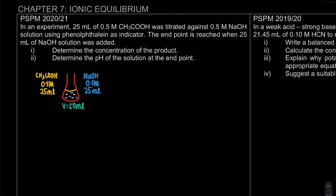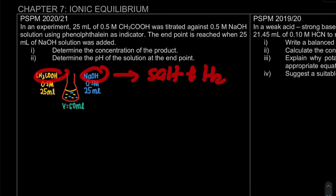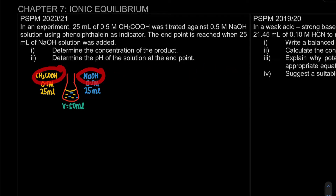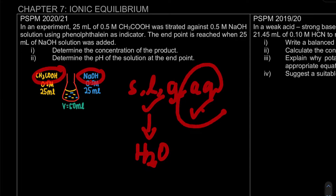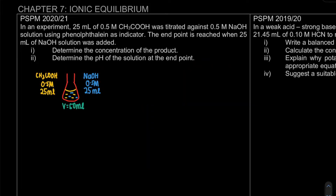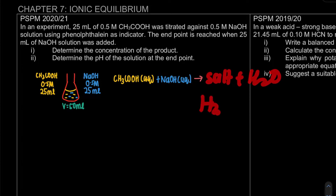The next question asks you to determine the concentration of the product. To do that, we first write down the equation of our acid and base: they react to form salt plus H2O. We need to include the state — whether solid, liquid, gas, or aqueous. In this chapter, H2O is liquid and all solutions are aqueous. The products are salt plus water.